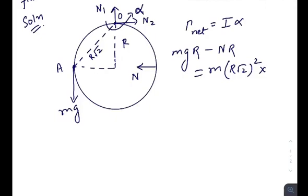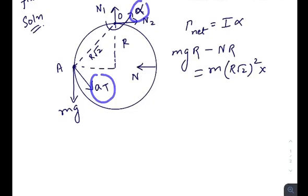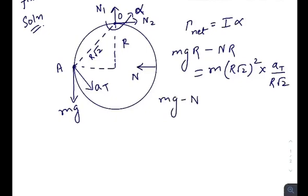Observing bead A from point O, the only acceleration of this bead is perpendicular to the dotted line — that is its tangential acceleration aT. There is a relation between α and aT: aT = α times the perpendicular distance, so α = aT / (r√2). The first equation then becomes: mg − N = √2 · m · aT.